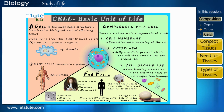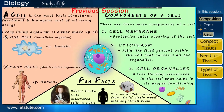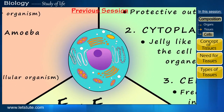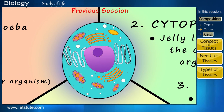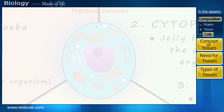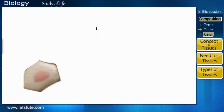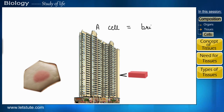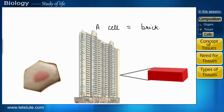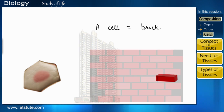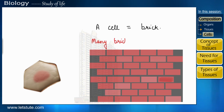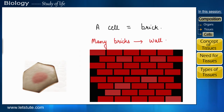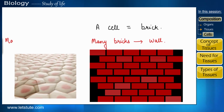Hello friends, we have been discussing about cells for a long time now. If you remember, we have said that a single cell is like a brick in a building, and just as many bricks make up a wall, many cells come together and form a tissue.